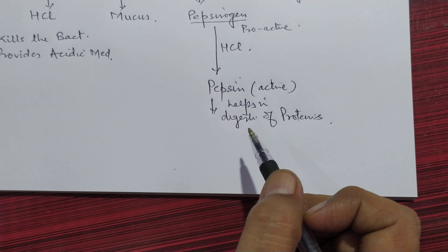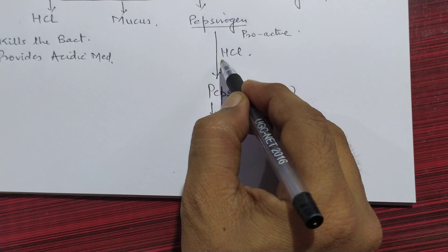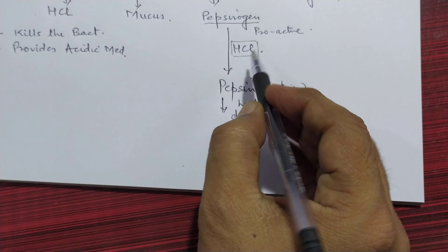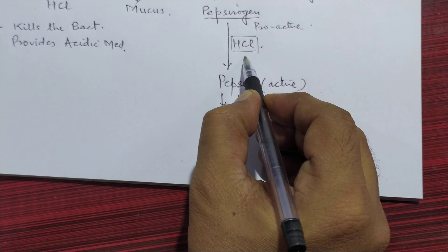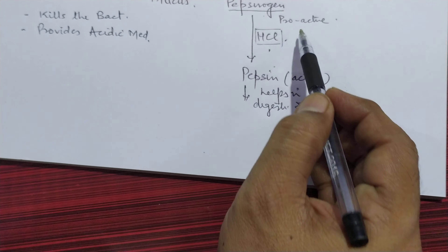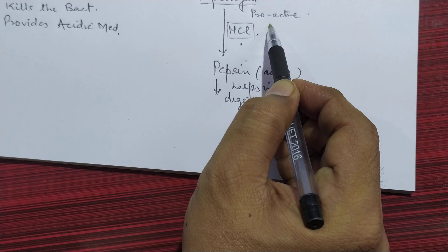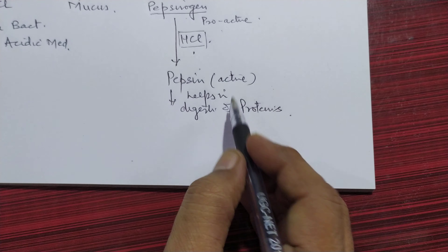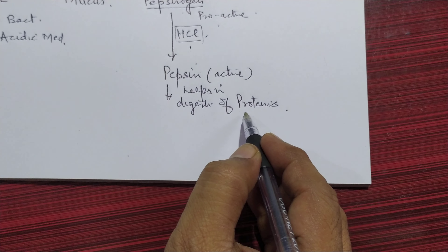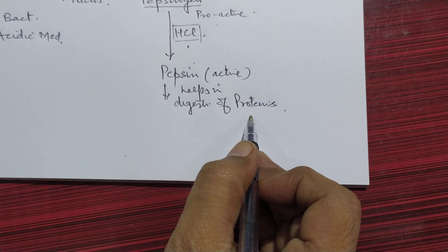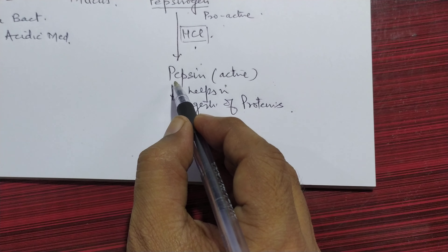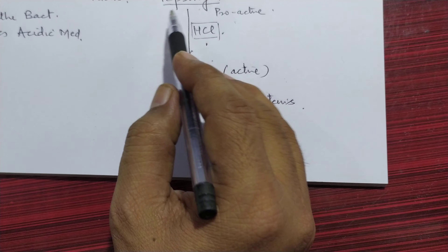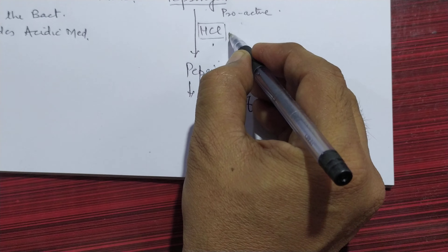So we can say that if HCL is not secreted by gastric glands, the pepsinogen — the pro-active form of the enzyme — is not converted into the active form, that is pepsin. The effect of this will be that there will be no digestion of protein, because the digestion of protein requires the active enzyme pepsin, which is converted from pepsinogen with the help of HCL.